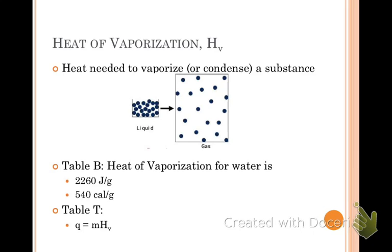Heat of vaporization. This one makes more sense because we're going from a liquid to a gas. It's the amount of heat needed to vaporize or go the opposite direction, condense a substance. For table B, they give you the value in joules per gram, 2,260 joules per gram. This is for water.